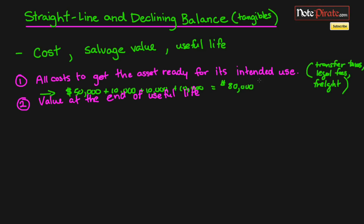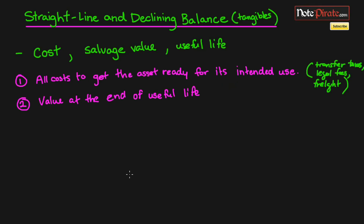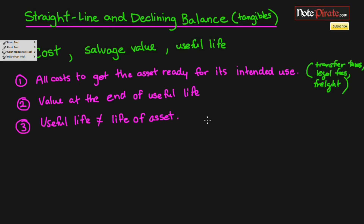Next, you'll need your salvage value, which is the value of the asset at the end of its useful life — essentially how much you expect it to be worth when you dispose of it. Finally, useful life is different from the physical life of the asset. Useful life means how long the asset is going to provide your company with benefit. For example, let's say it becomes obsolete after 15 years.